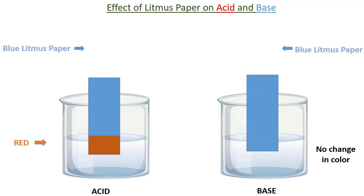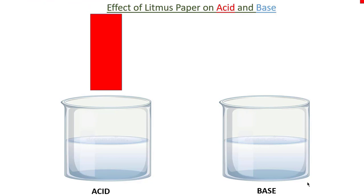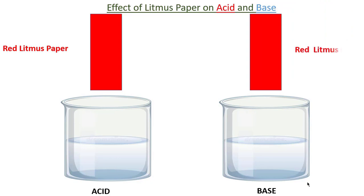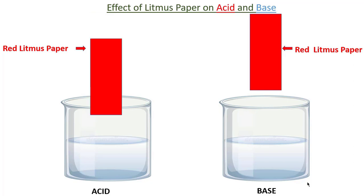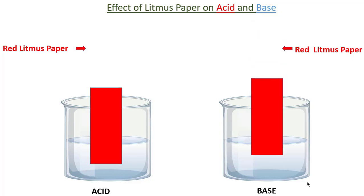Now let us consider the red litmus paper. We have two beakers containing acid and base solutions. When we dip the red litmus paper into the acid solution, there is no change in color. Similarly, when you dip the red litmus paper in the base solution, it changes into blue color.